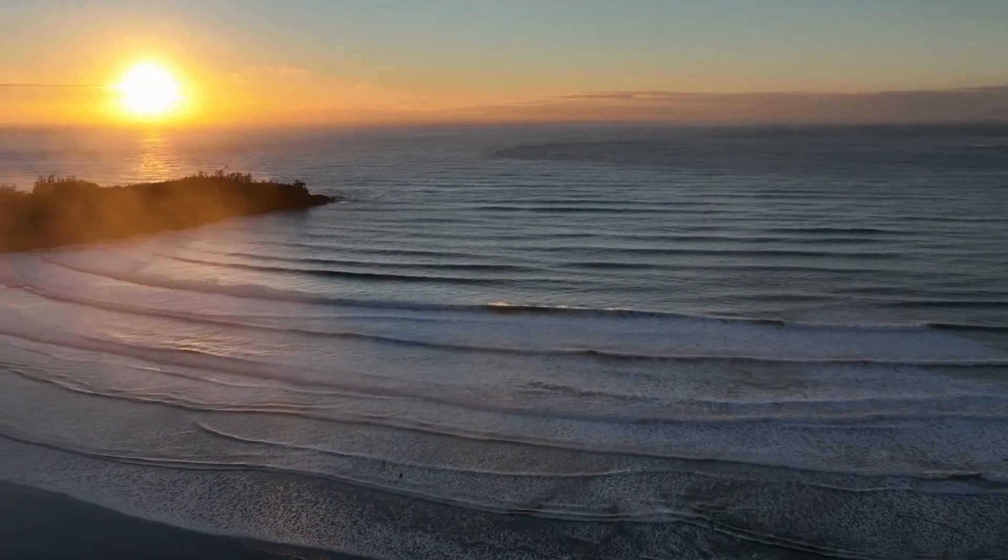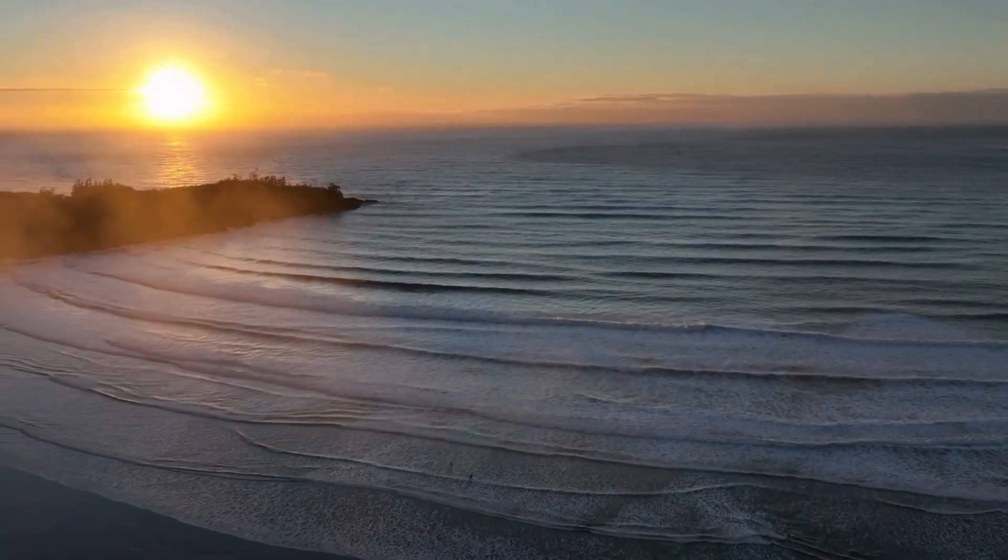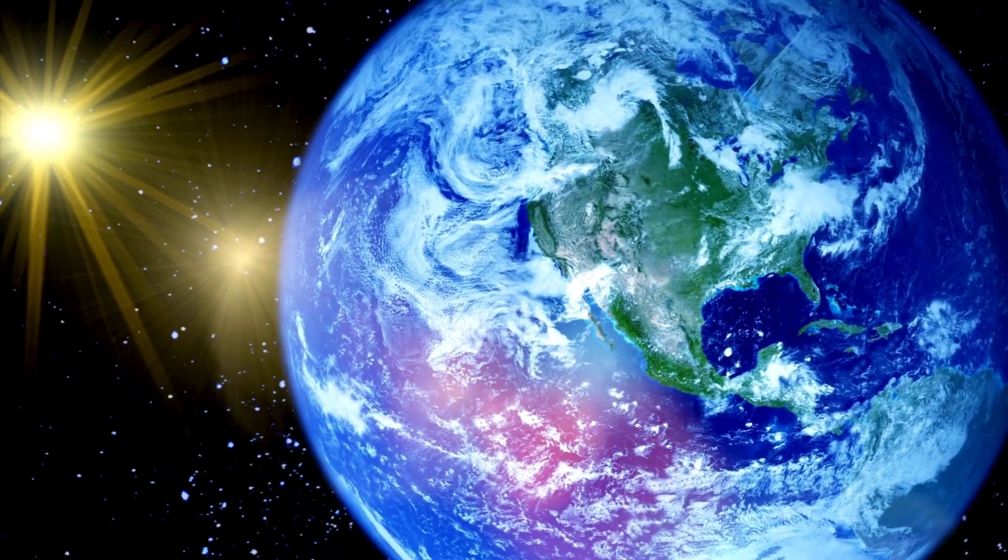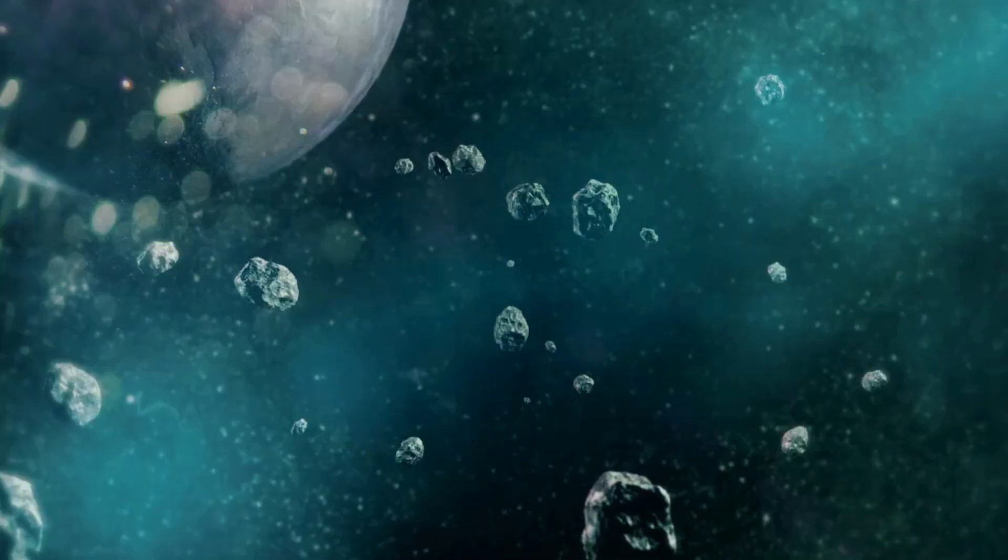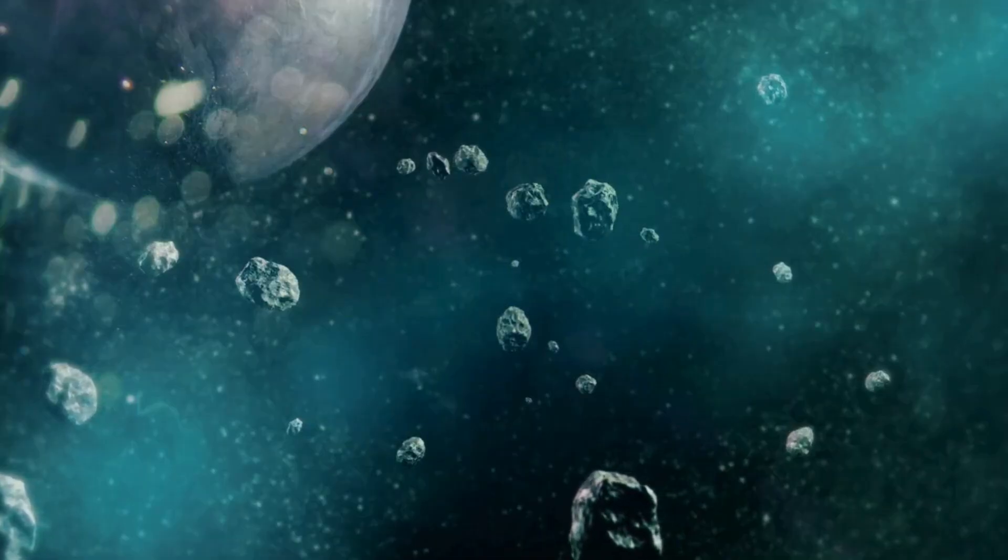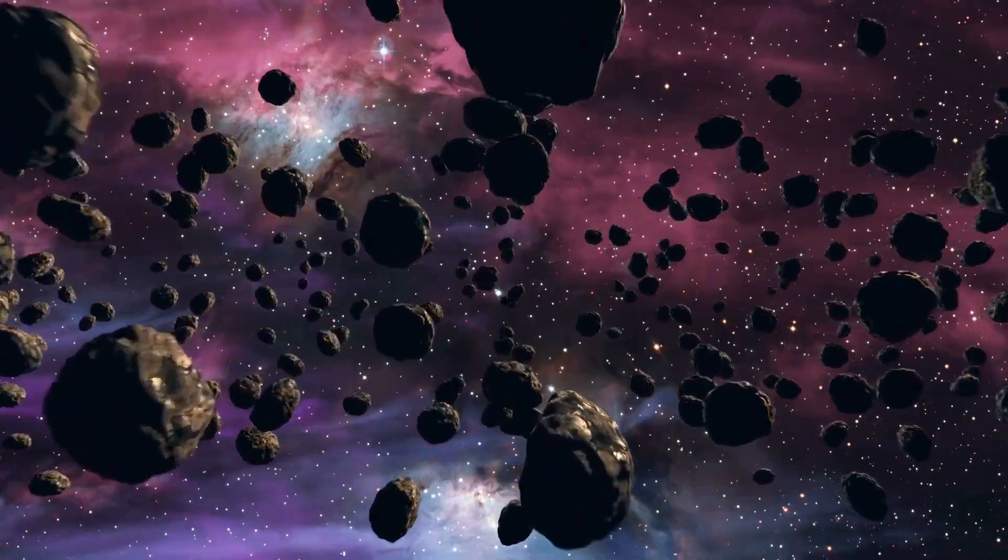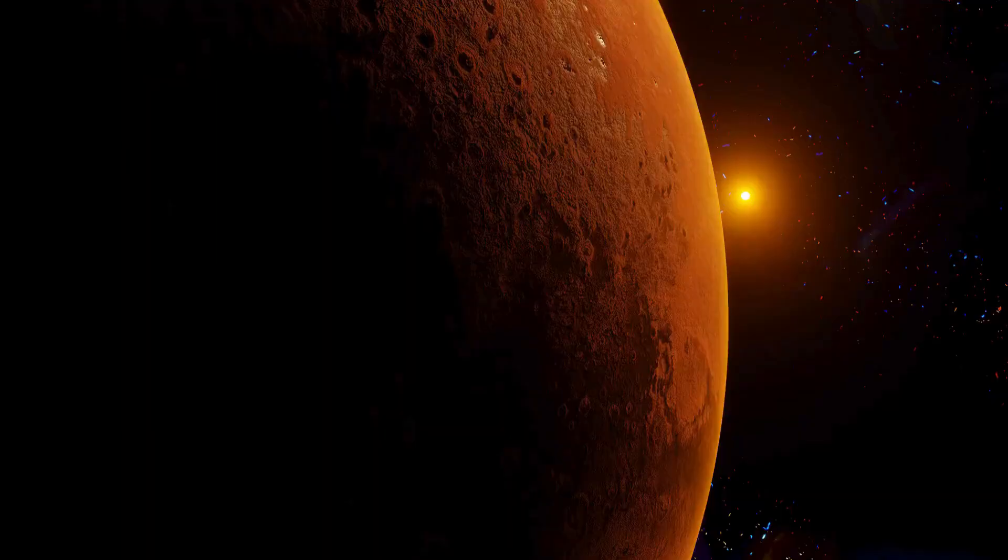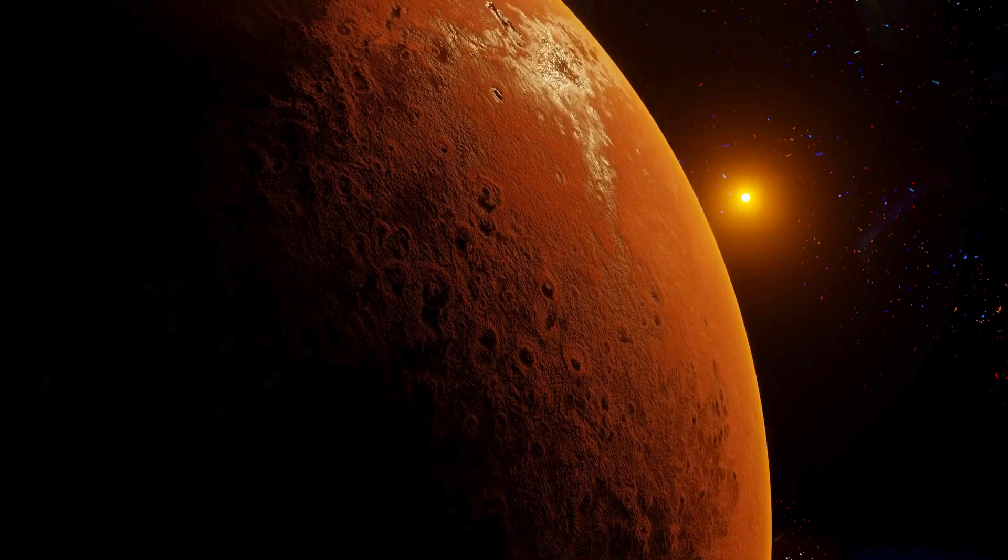At that point, the sun will be around 200 times larger and 2,000 times brighter than it is today. About 2.5 billion years after that, the sun will likely engulf Earth. So, the sun has approximately 7 to 8 billion years left before it sputters out and dies.